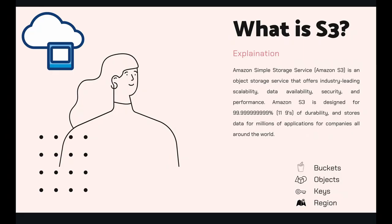With every object there are some keys associated with it — essentially an ID for each object. Another important concept is region: the bucket is always associated with a specific region. This is basically the overview of S3, so now let's jump directly into our session.